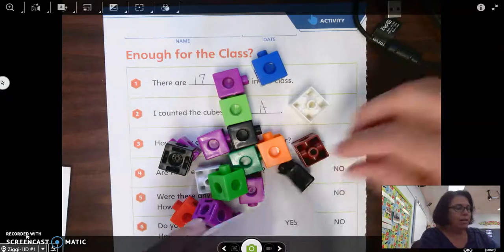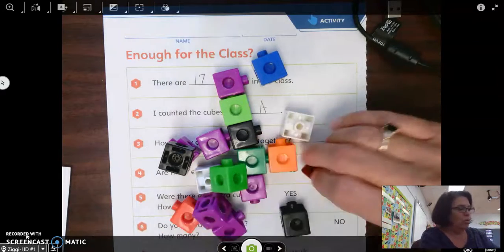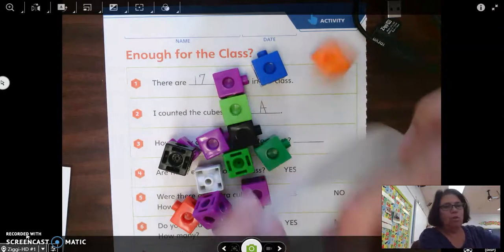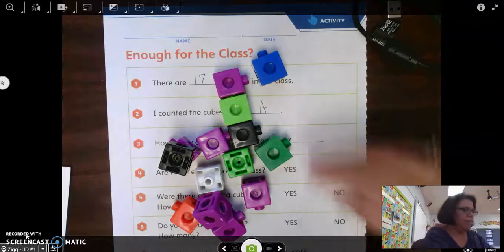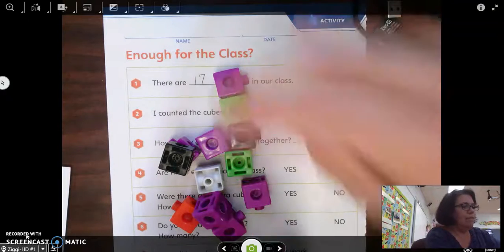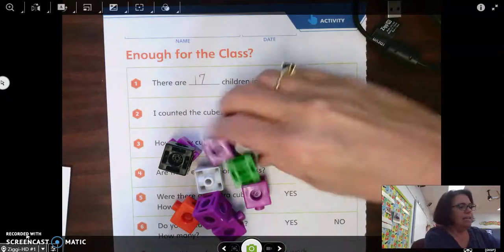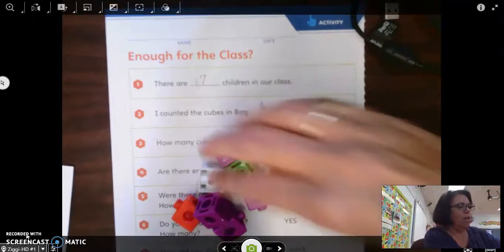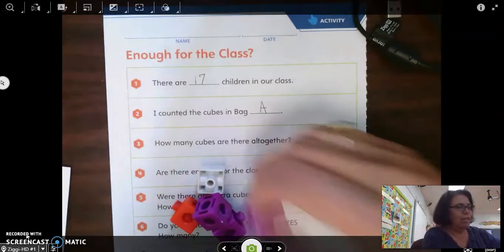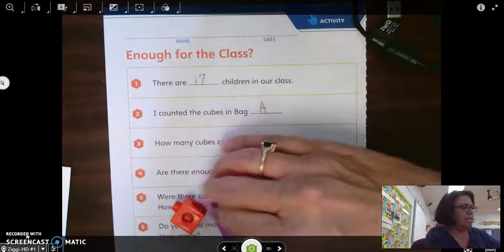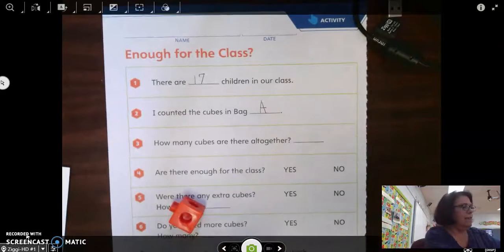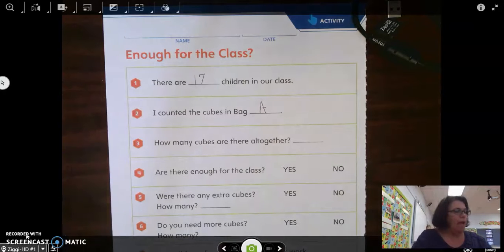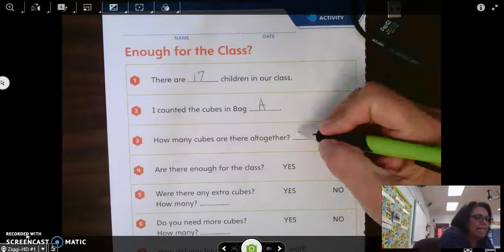1, 2, 3, 4, 5, 6, 7, 8, 9, 10, 11, 12, 13, 14, 15, 16, 17, 18, 19. So how many cubes are there all together? There are 19.